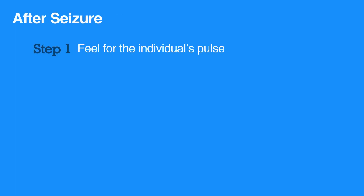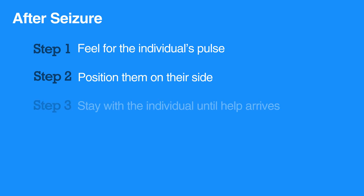After the seizure is over, feel for the individual's pulse. Position them on their side to reduce the chance of choking on vomit, as it is possible for them to throw up after a seizure. Stay with the individual until help arrives.